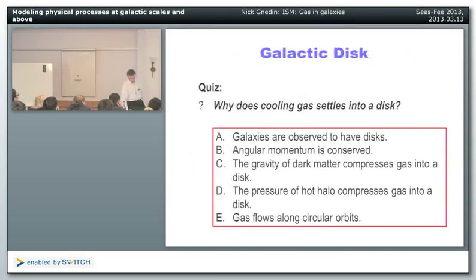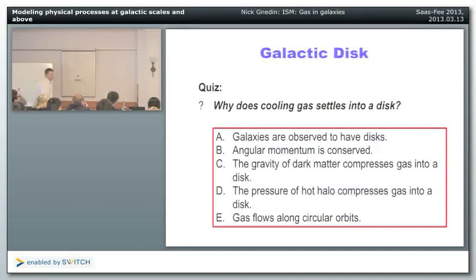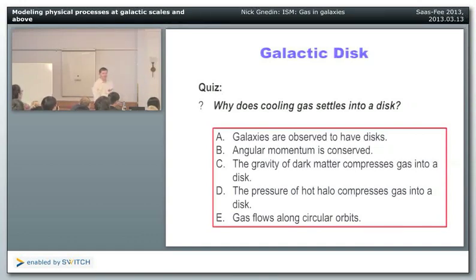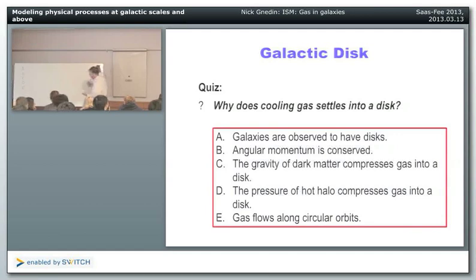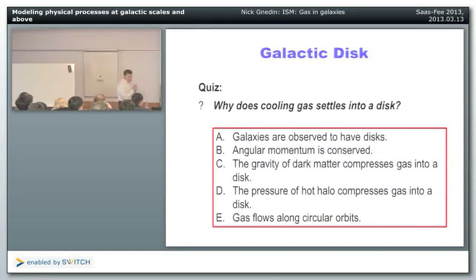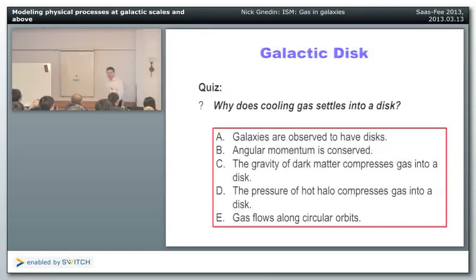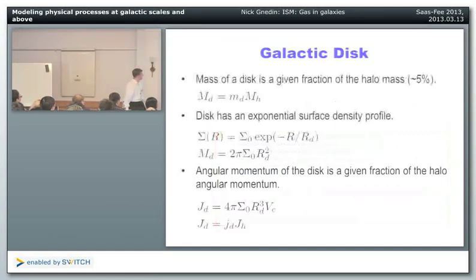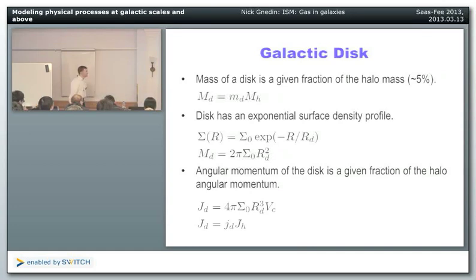The gas settles into a galactic disk. The reason it forms a disk is angular momentum conservation: when the gas cools, it loses its pressure support, and the only force that can support it against collapse is rotation. In the Mo, Mao & White model, some fraction of the total halo mass — say five percent — goes to form the disk. The model also assumes disks have exponential profiles, which is observed. You can compute the disk mass if you know the scale radius and central density.